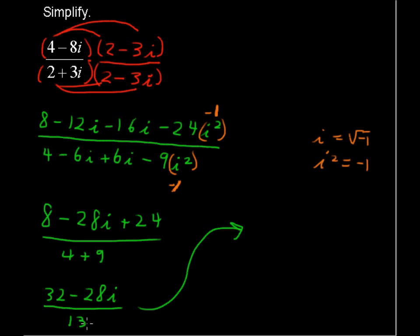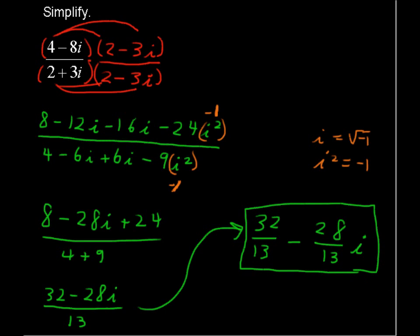Standard says that we want to write the real part and the imaginary part. So I'm going to break this up: 32 divided by 13 minus 28 over 13i. And that is the process to divide complex numbers.